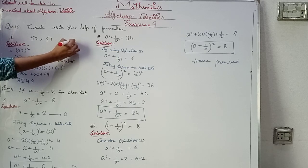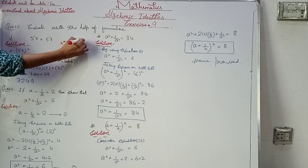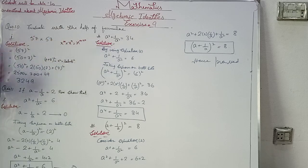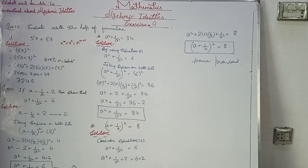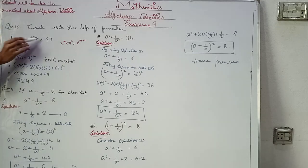According to the exponent law, x to the power m multiplied by x to the power m is equal to x to the power m plus n. So when the bases are same, the powers get added in a multiplication operation.